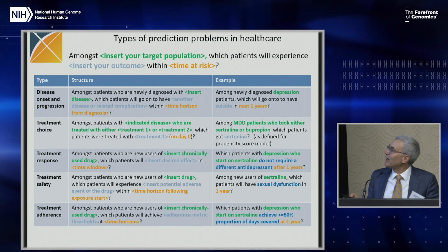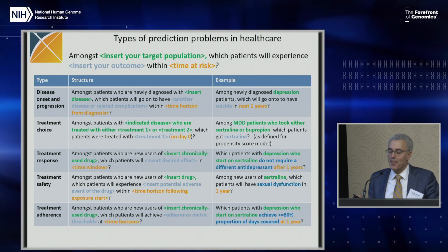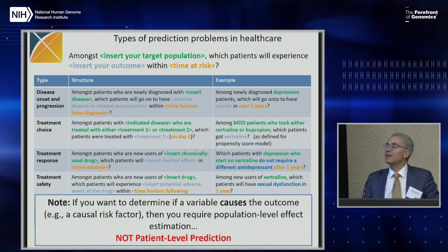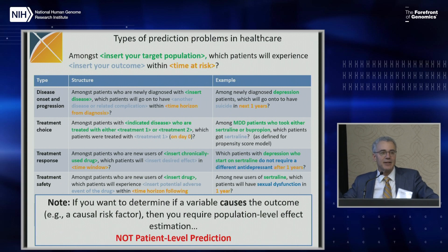Here are the kinds of questions we answer: disease onset and progression, treatment choice, treatment response, treatment safety, and treatment adherence. This is not causal — there's prediction of risk, and then there's the counterfactual and predicting causes. I'll go into more detail on that at the end.